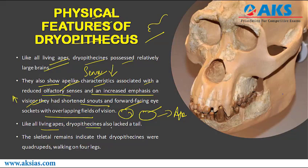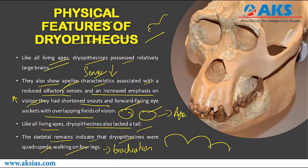Like all living apes, Dryopithecus also lacked a tail. Skeletal remains indicate that Dryopithecus were quadrupeds, walking on four legs. They adopted brachiation — jumping from one tree to another. In summary, their features were a combination of monkeys, apes, and man, displaying characteristics including a small skull, narrow face, smaller brain, and hand bones similar to those of monkeys.